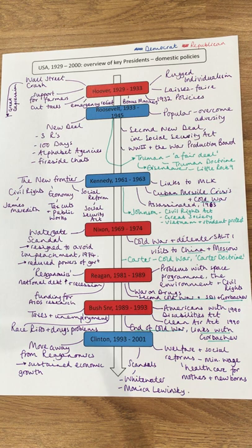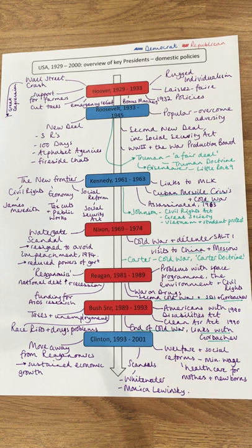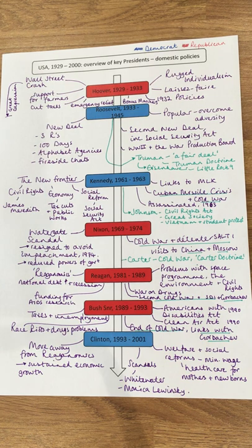The next really key president we need to know about is John F. Kennedy — JFK. His major domestic strategy was something called the New Frontier, and that incorporated three themes: civil rights, the economy, and social reform. Kennedy also had really strong links with civil rights campaigners such as Martin Luther King, and they were preparing the Civil Rights Act. Kennedy was also the leader of the US during the Cuban Missile Crisis, as part of the Cold War.